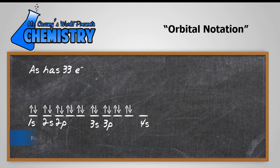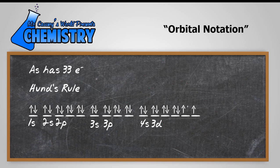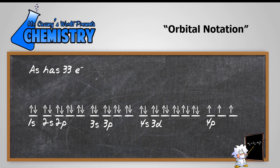Let's fill up the 4s, and of course 4s fills before 3d because of the orbital overlap. And again Hund's rule. And there we have it, the orbital notation.